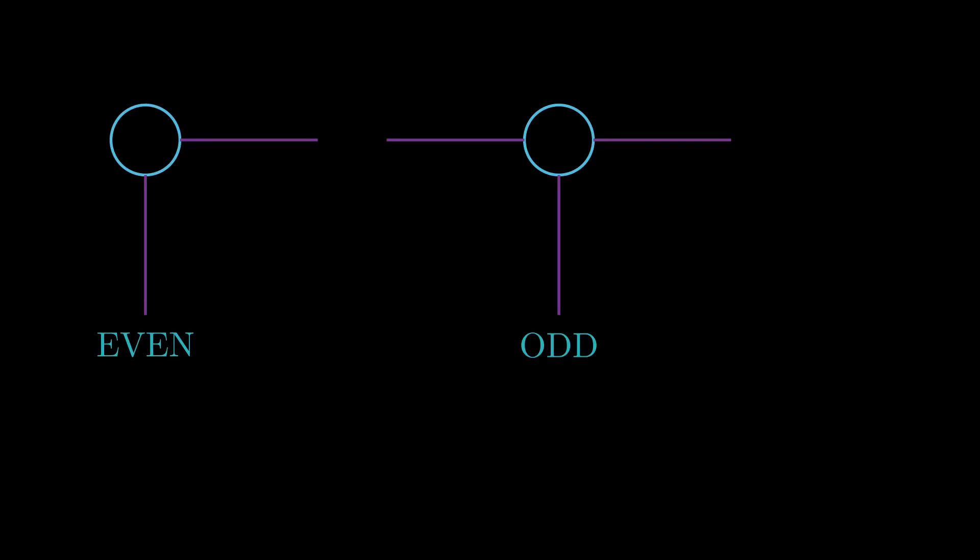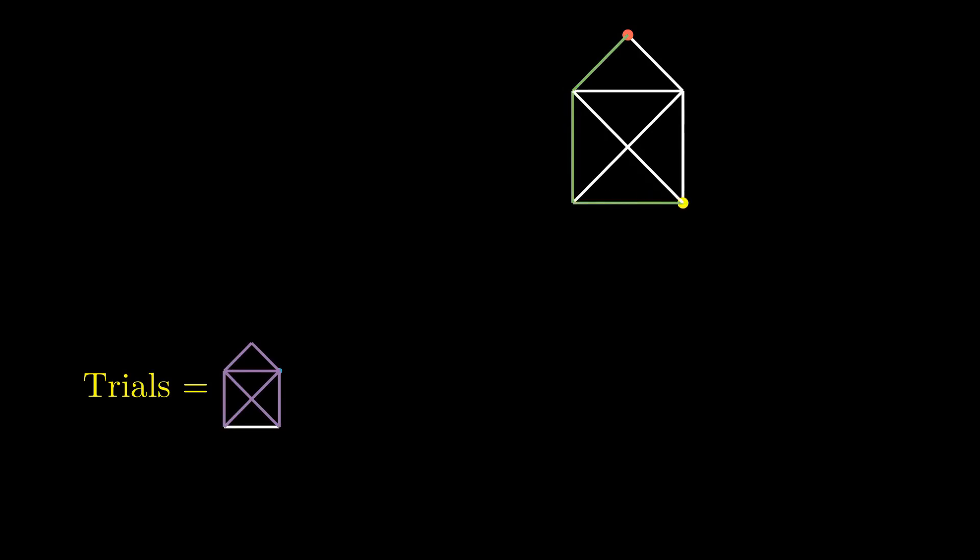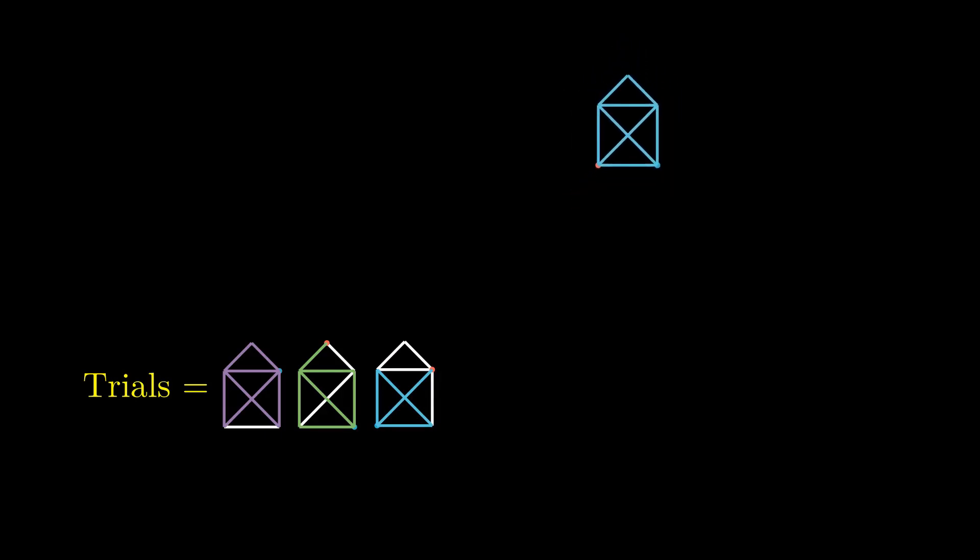Let us now look at a few more examples other than the bridges of Königsberg. Presenting you the hit and trial for various examples. In this first example, an Eulerian path is possible and can be easily found by hit and trial.